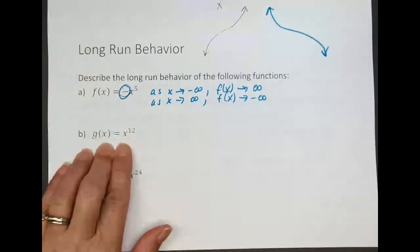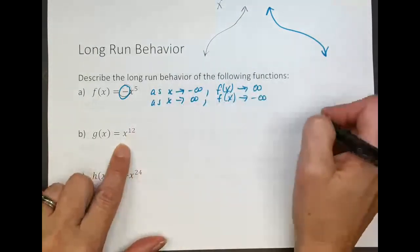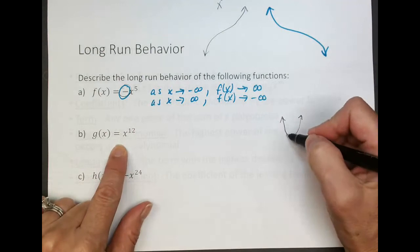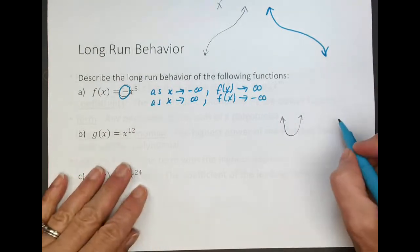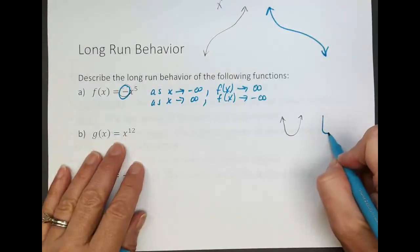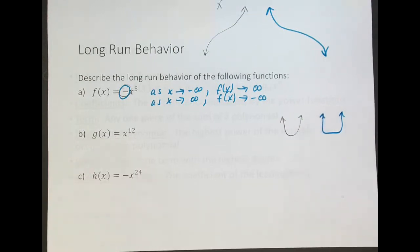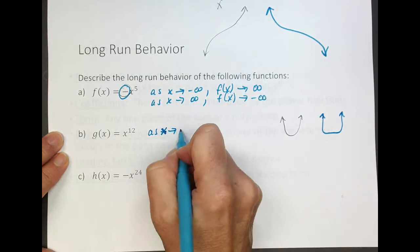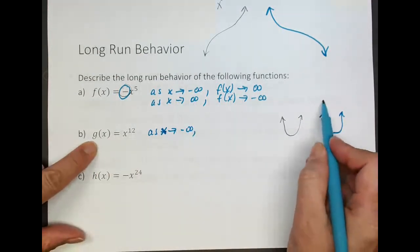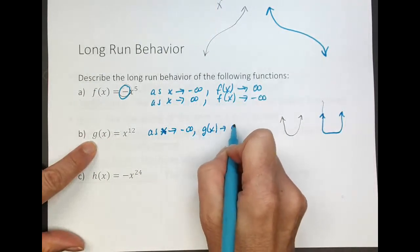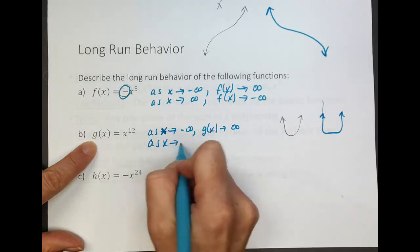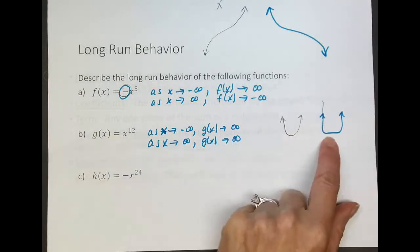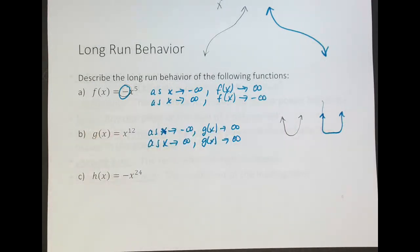Next, g of x equals x to the twelfth power. That's going to resemble the quadratic function because it's an even exponent, except there'll be more squaring. There's no reflection, so it will look something like a wide parabola. As x approaches negative infinity, g of x approaches positive infinity. And as x approaches positive infinity, g of x also approaches positive infinity. End behavior goes off in both directions in the same direction for even functions.